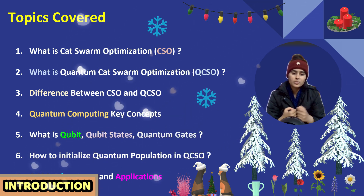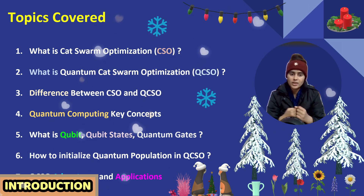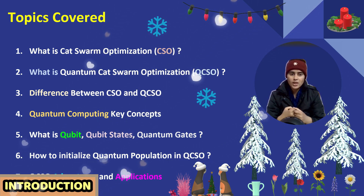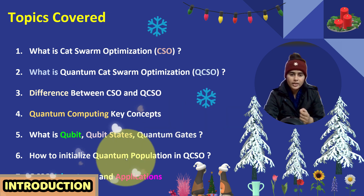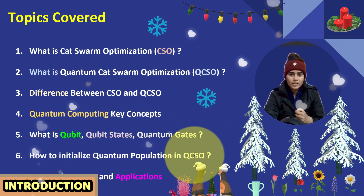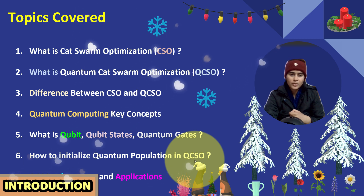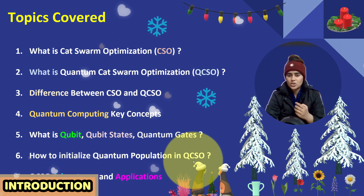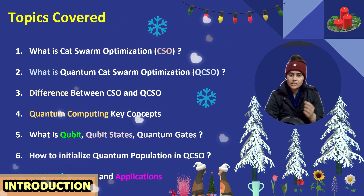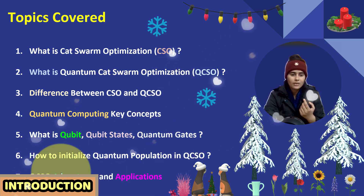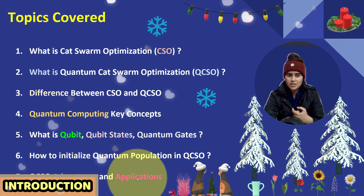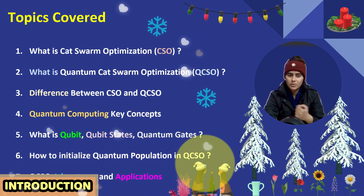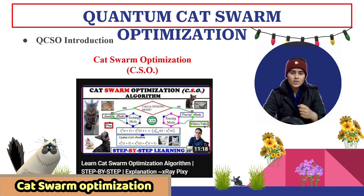Then we will understand how quantum cat swarm optimization algorithm is working step by step using a flowchart. It involves how we can initialize the quantum population, how we can update the cat's position in the search space using quantum gates. In the end, we have advantages and applications for quantum cat swarm optimization.